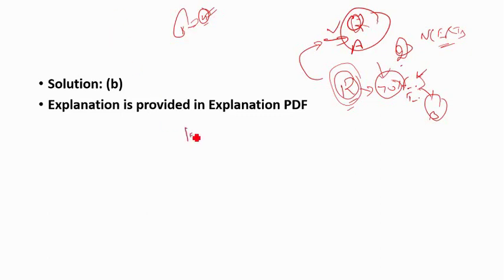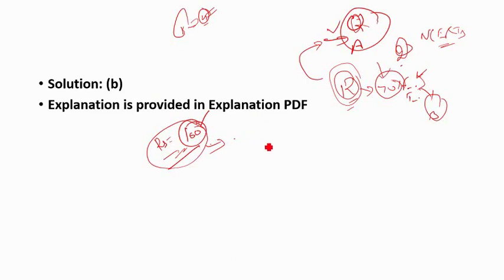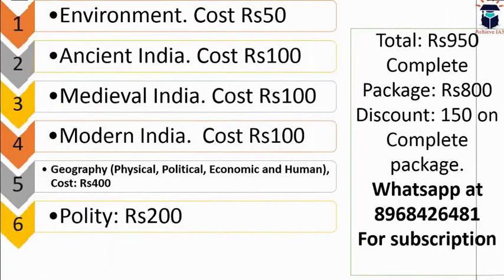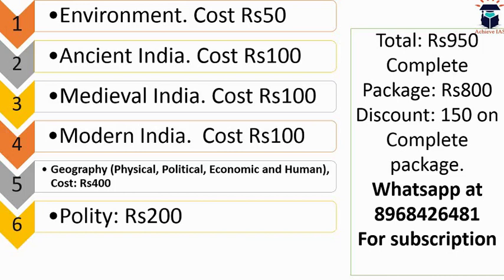We are not charging much — just rupees 100 for the explanation PDFs of each series. That is a single one-time payment of rupees 100, and you will be subscribed to all the modern India PDFs. To subscribe, WhatsApp us at 8968426481. There are also other series currently running on our channel: environment, ancient India, medieval India, modern India, geography, and polity. The total amount for all series is rupees 950, but we are offering a discount of rupees 150, so you can get the complete package for rupees 800. WhatsApp us at 8968426481.